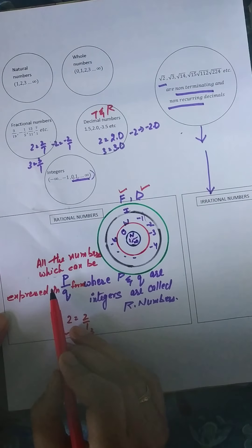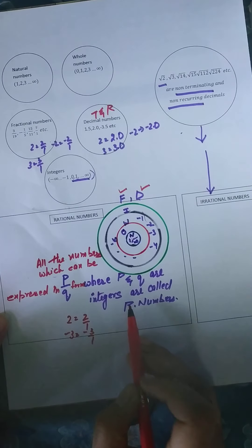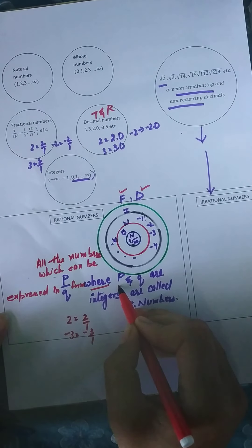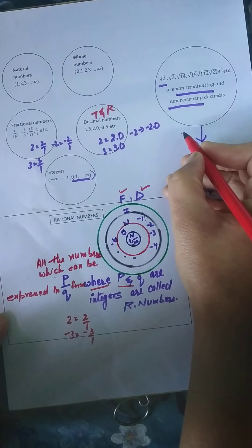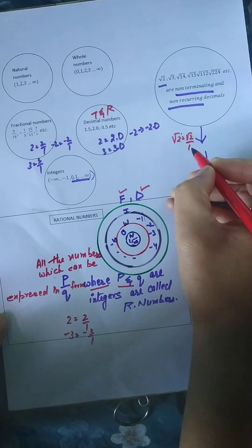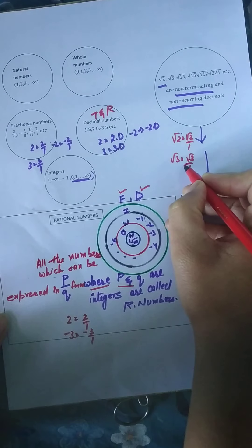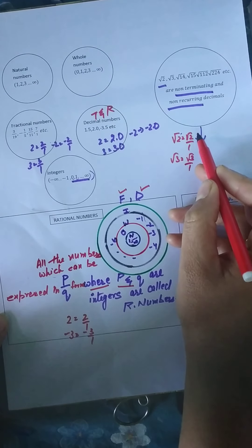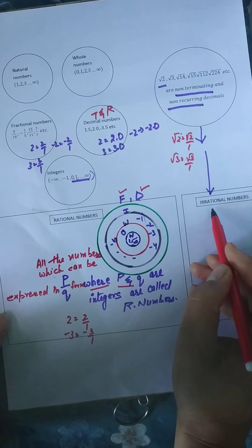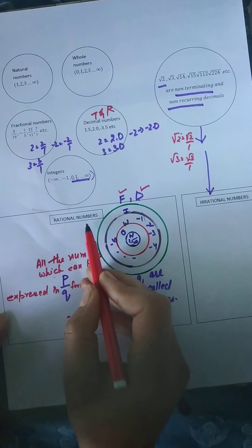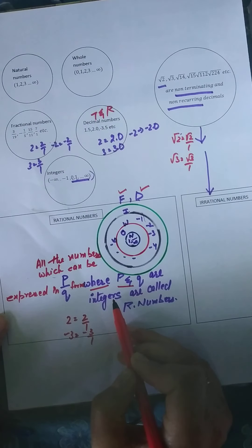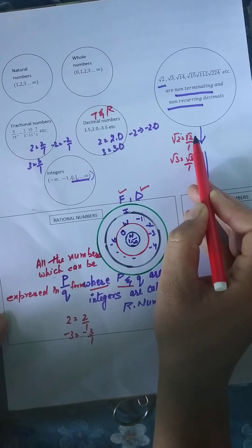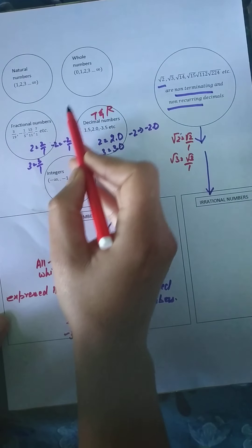And these decimals — the terminating ones and the recurring ones — we know how to convert both terminating and recurring decimals into fractional form. So both types of decimals can be converted into P over Q form. That's why the definition says all numbers which can be expressed in P over Q form, where P and Q are integers, are called rational numbers. The clause 'where P and Q are integers' is added because someone could write root 2 as 2 root 2 over 1, which is technically P over Q form but P is not an integer — root 2 does not come under integers. So irrational numbers must not fall under this definition.